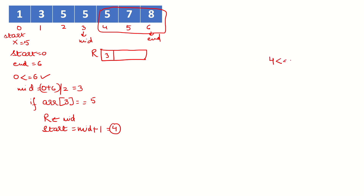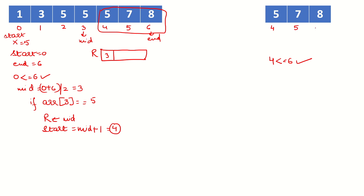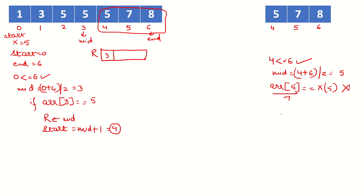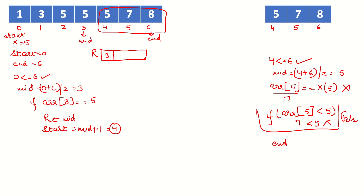Start is 4, end is 6 — the condition is true. The new list has elements at indices 4, 5, and 6. We calculate the new mid. The value at the middle index is not X (X is 5, the value is 7), so the condition is false. We then check if arr[mid] is less than X: 7 is not less than 5, so we shift end to mid minus 1.